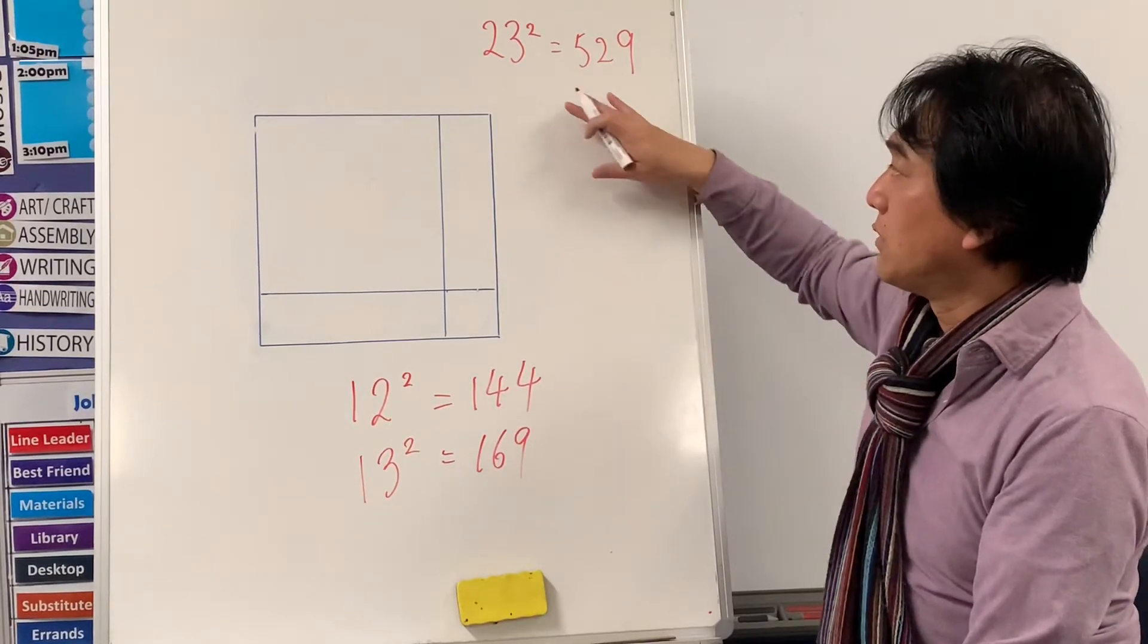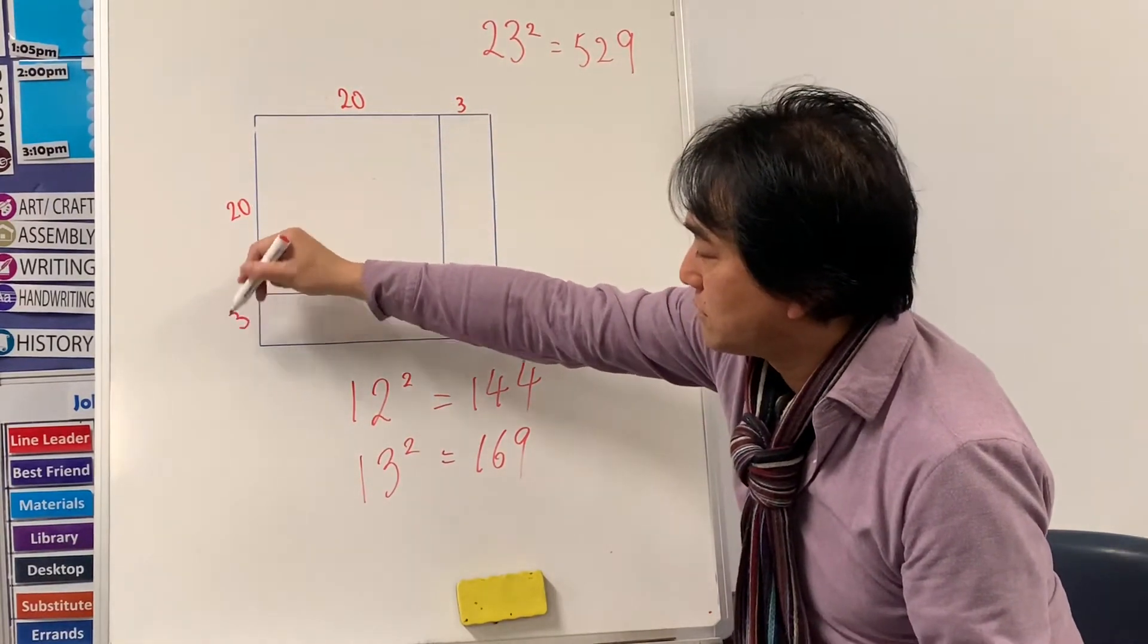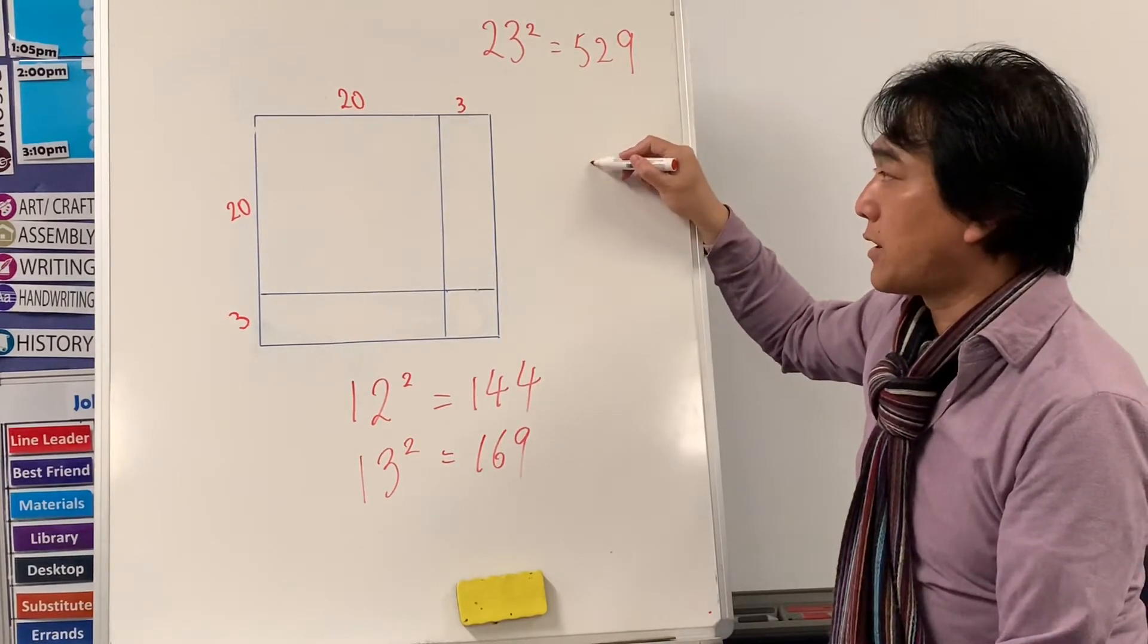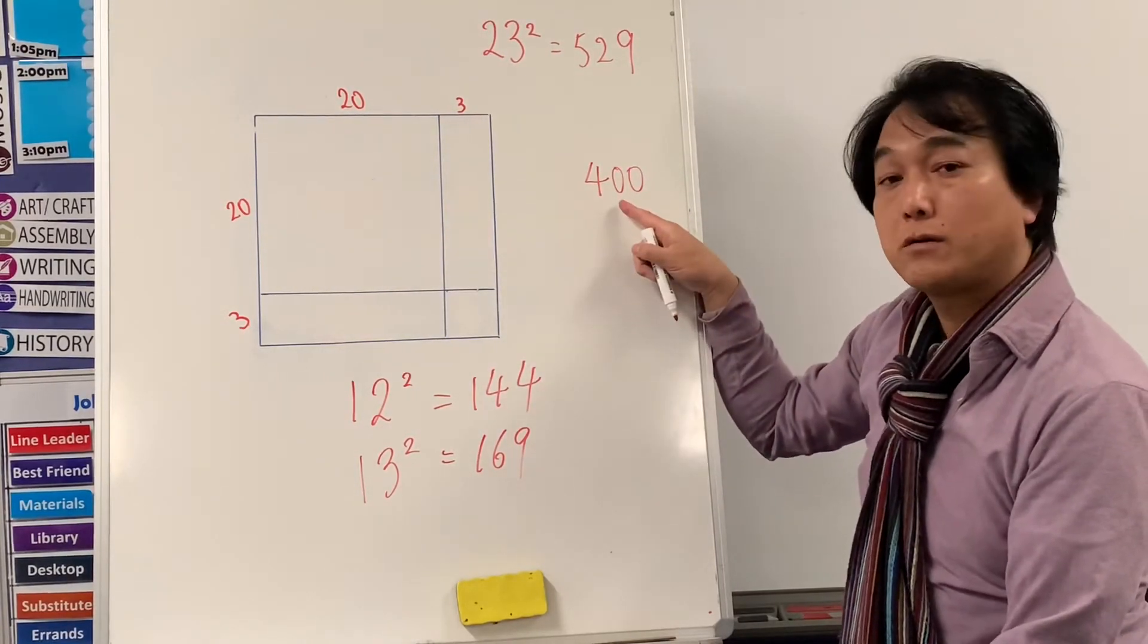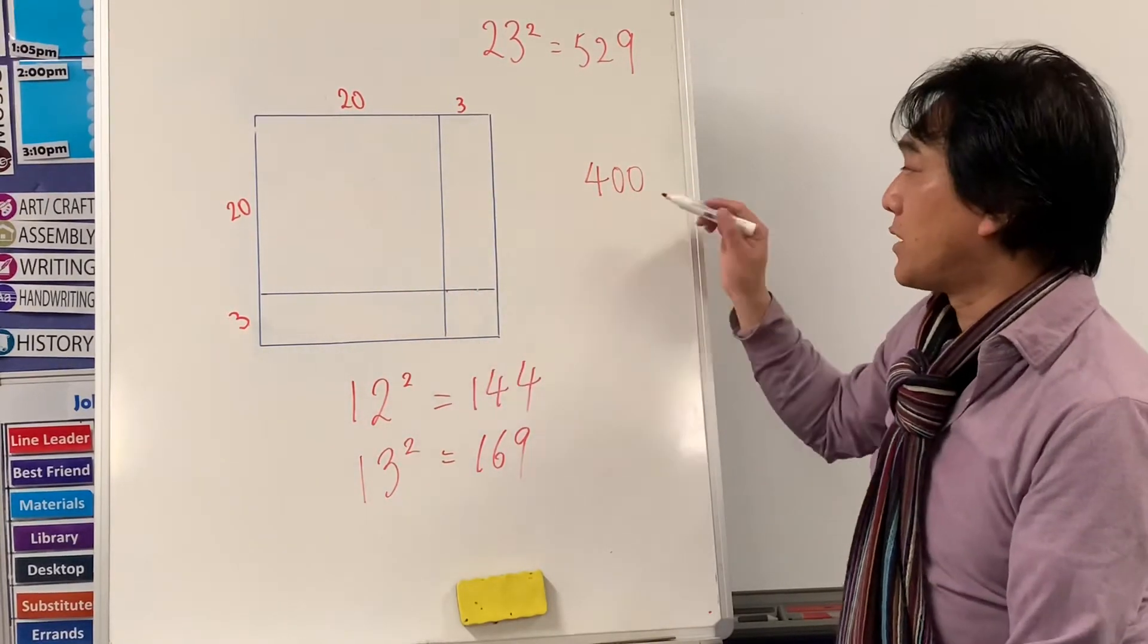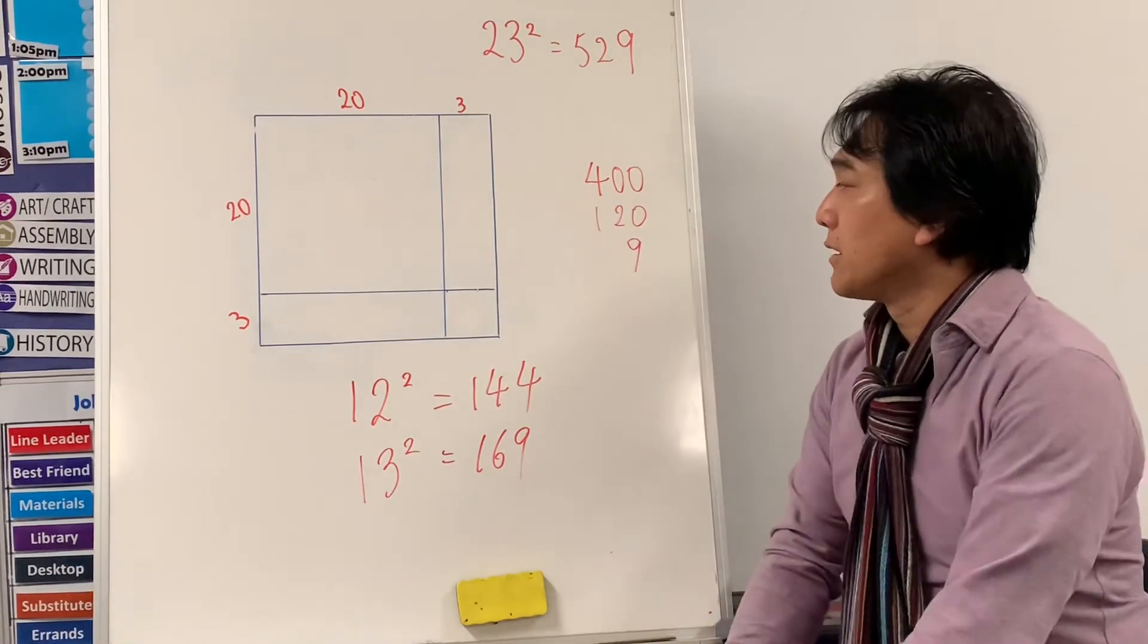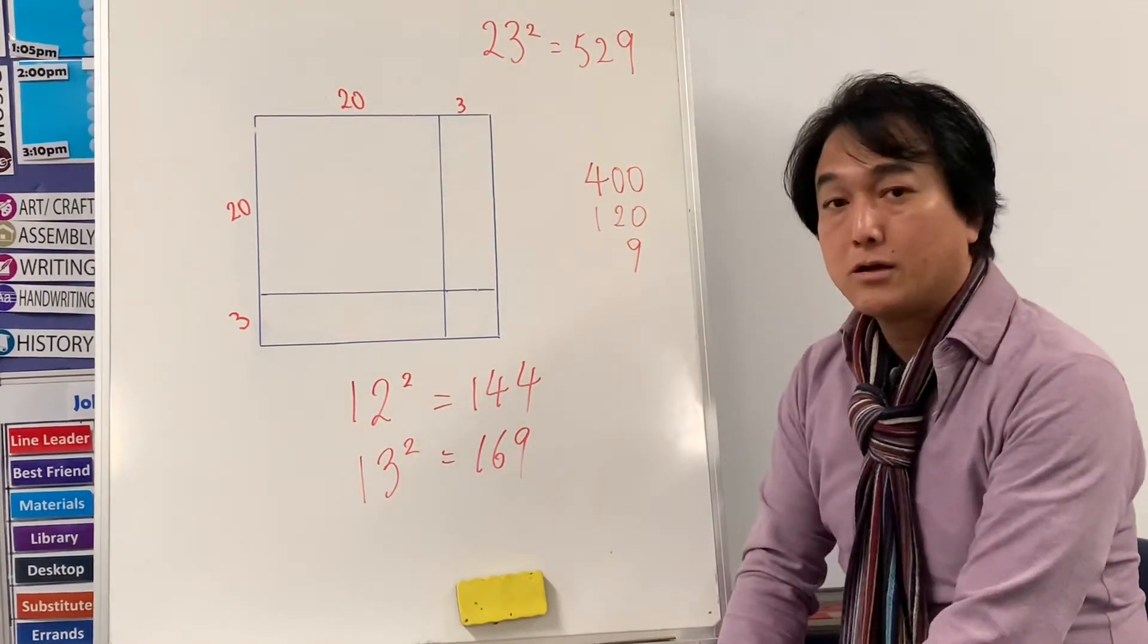First step is we actually write twenty-three, twenty-three, write these numbers and write the answers of each box. Then we add them together. Let's have less steps. We'll prepare this box. We're not going to write any numbers in there, but we're going to start writing numbers. Twenty times twenty is four hundred. This is twenty times three, that's sixty. This is also sixty. I can write sixty, sixty or I can just write twenty. Then last number is three times three, that's nine. Then that is five hundred and twenty-nine.